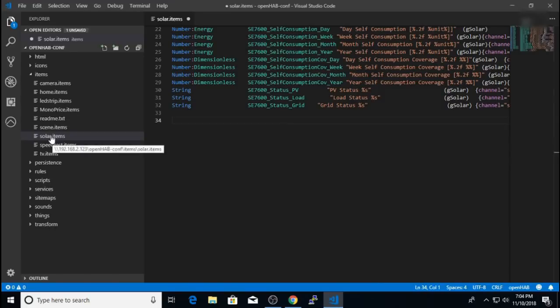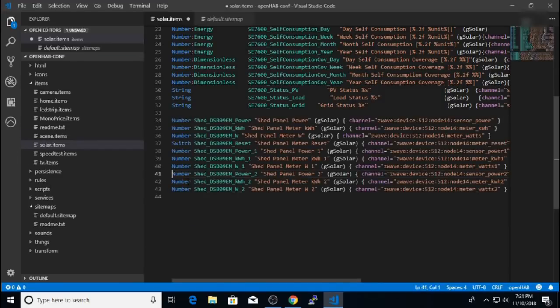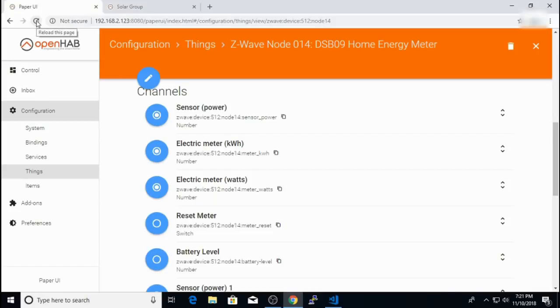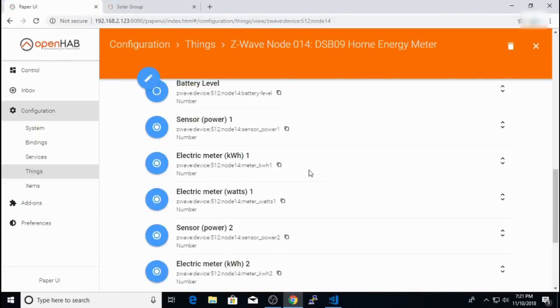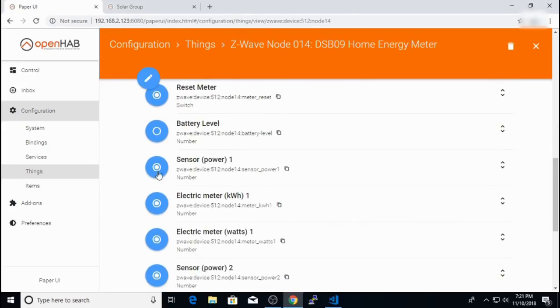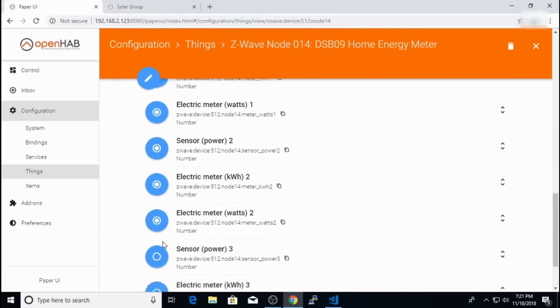So I'll actually add these items to my solar.items file. Okay, so I've gone ahead and created the items for the channels that I'm interested in seeing, including an item for a reset switch to be able to reset the meter from my user interface. So I'll go ahead and hit save on these items that I've created. And now when I refresh the thing configuration here, you'll notice we have all the channels that I created the items for are linked.